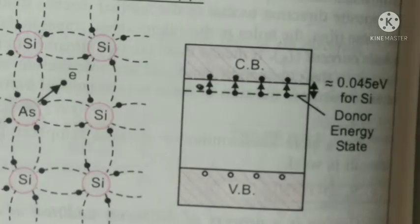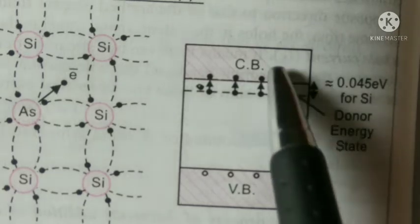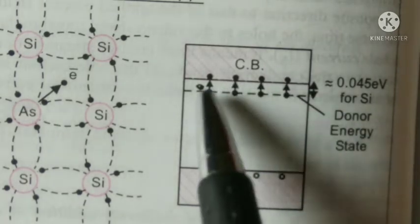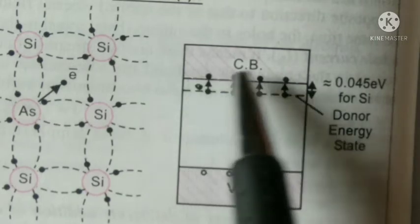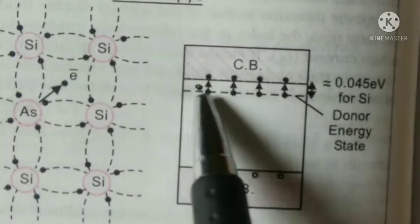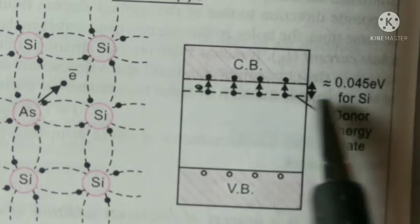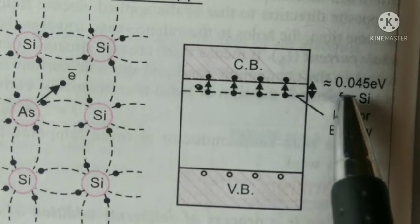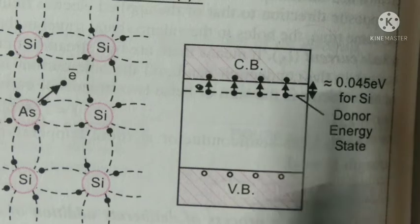In energy band diagram, these free electrons have energy slightly less than the lowest energy of the conduction band. The energy level of the donor atom is, in case of silicon, 0.045 electron volts.